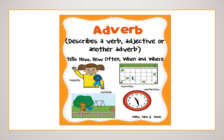Next one is adverb. Split the word: ad and verb. An adverb is a word which gives us more information about any adjective, any verb, or another adverb. It describes a verb and tells us how, how many, where, and when. For example: happily, outside, monthly, yesterday, rarely. These are adverbs.